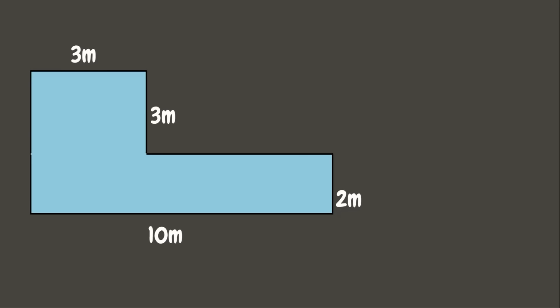Now let's go back to our first example. The first thing we need to do to get the area of this composite figure is to divide it into basic shapes. Here we can see that we can divide this into two basic shapes: the rectangle and the square.